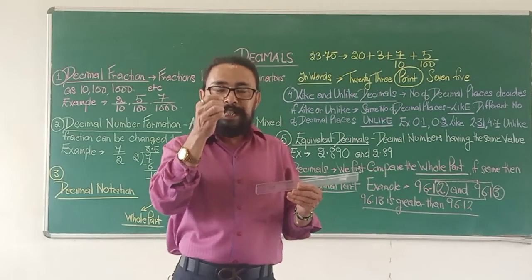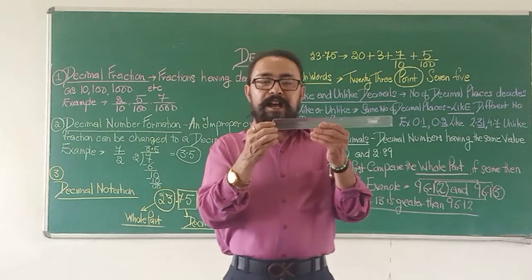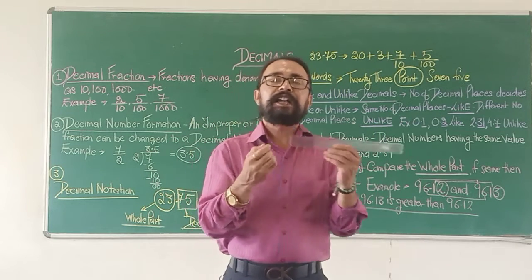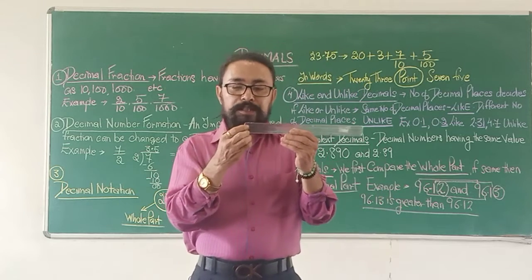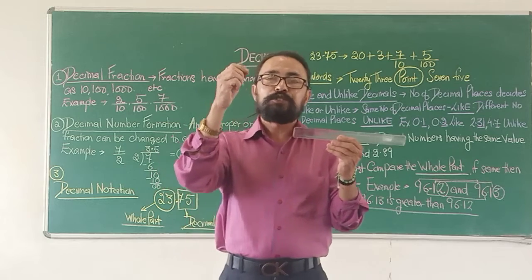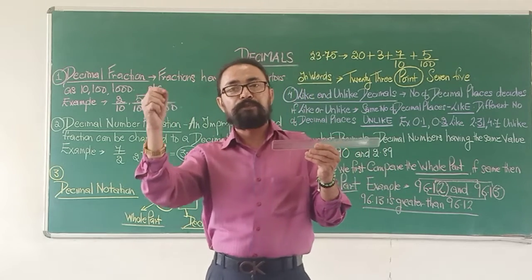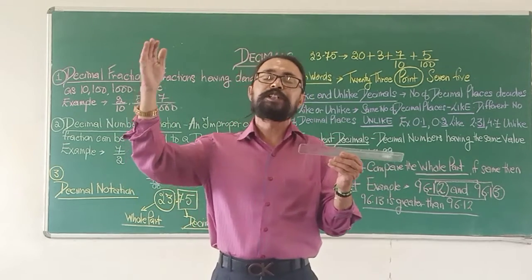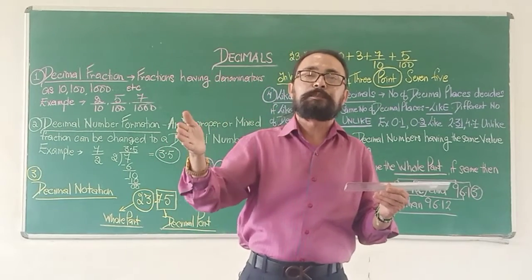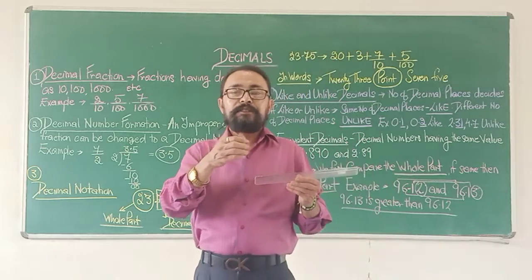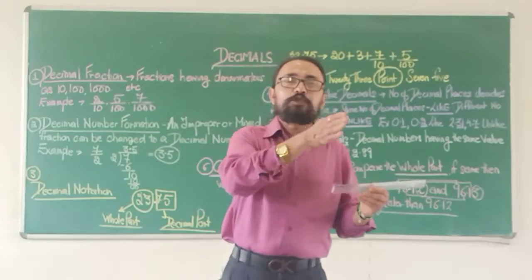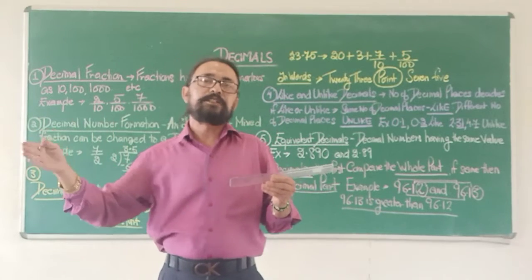Each part is called a millimeter. So when I am going from 1 to 2 and I go only halfway, I call it 1.5. Because the first line after 1 will be 1.1, then 1.2, then 1.3, then 1.4, then 1.5 and so on till you reach 2. So each centimeter has been divided into 10 equal parts. Similarly, when going from one number to another, I need to know the number of equal parts it is divided into before I reach the next number.